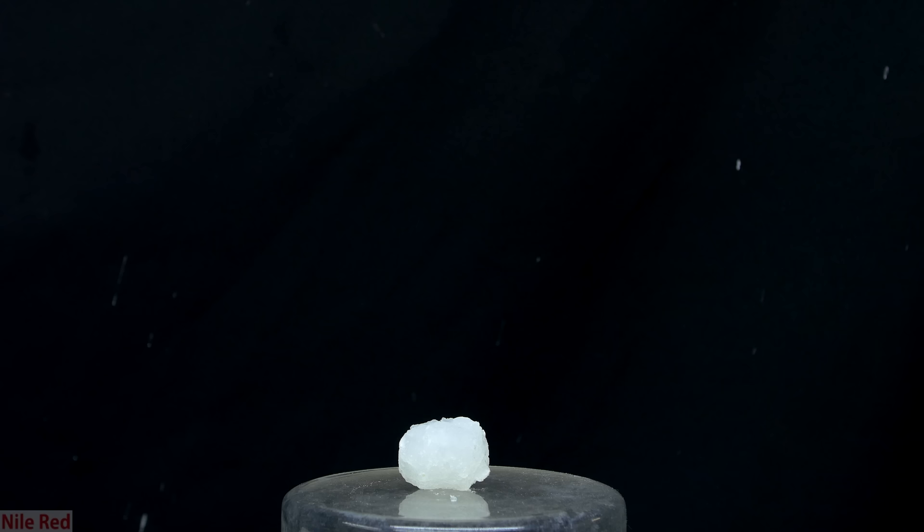To test the jellied alcohol, I placed one of my snowballs on the bottom of a crystallizing dish, and I lit it on fire using a match. It very quickly ignites, and our alcohol slowly burns away.